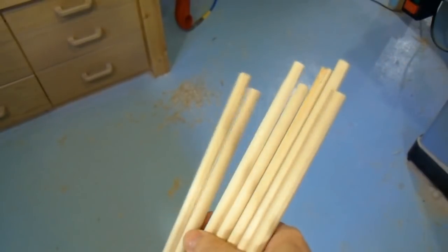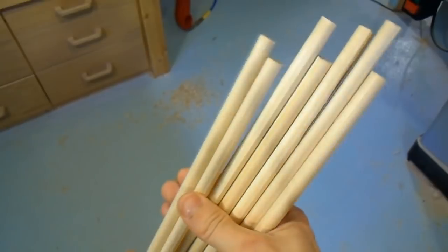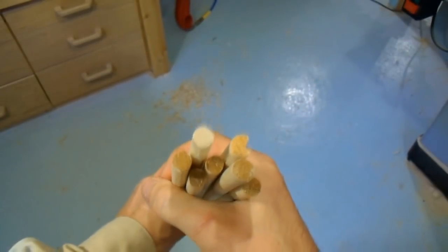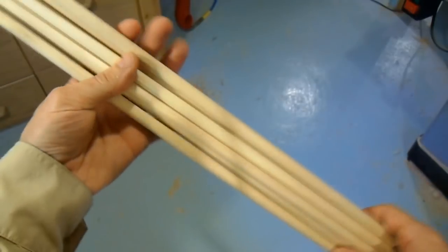Here's the dowel blanks. They look kind of almost like dowels already but they're too large. And they're not entirely round. They're only with the corners rounded off. Next comes the magic part.